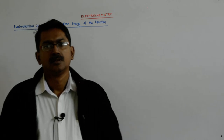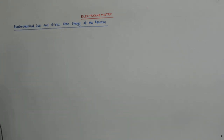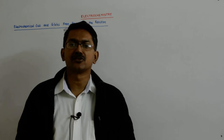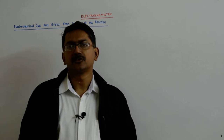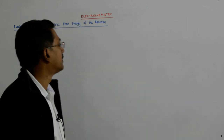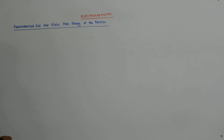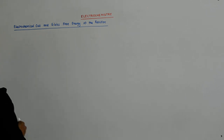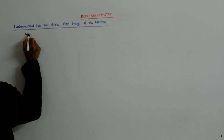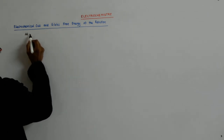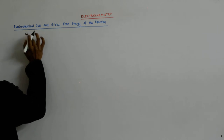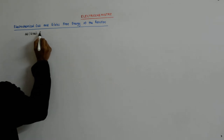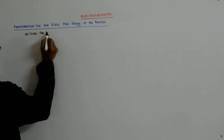We now come to a new topic called electrochemical cells and Gibbs free energy of the reaction. We have studied Gibbs free energy in class 11, so let me take you back to that a bit. Gibbs free energy is the maximum work — we have studied that the change in Gibbs free energy is called Gibbs free energy.